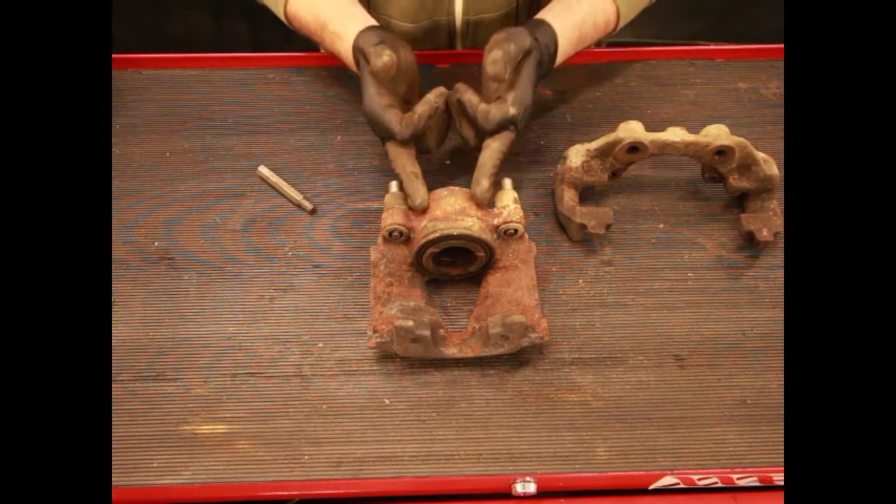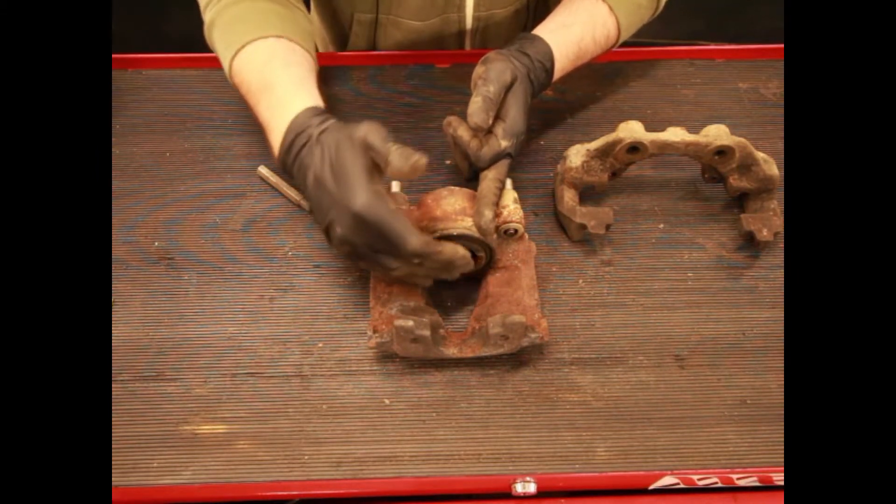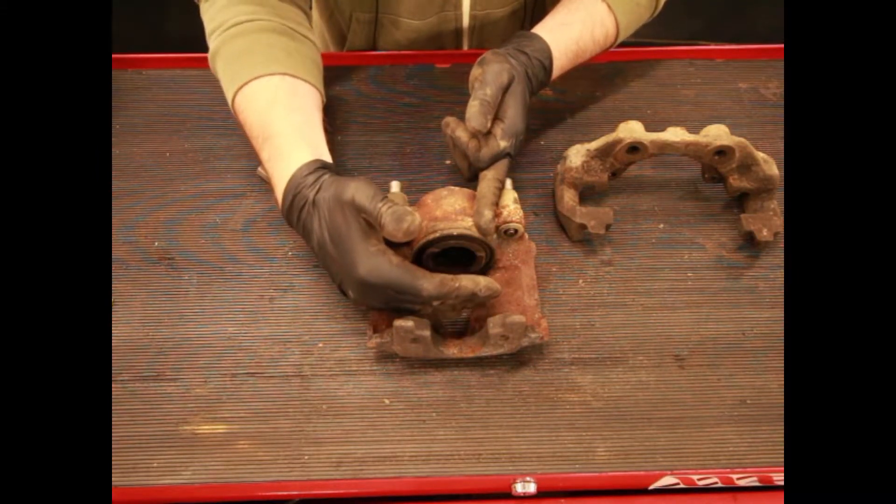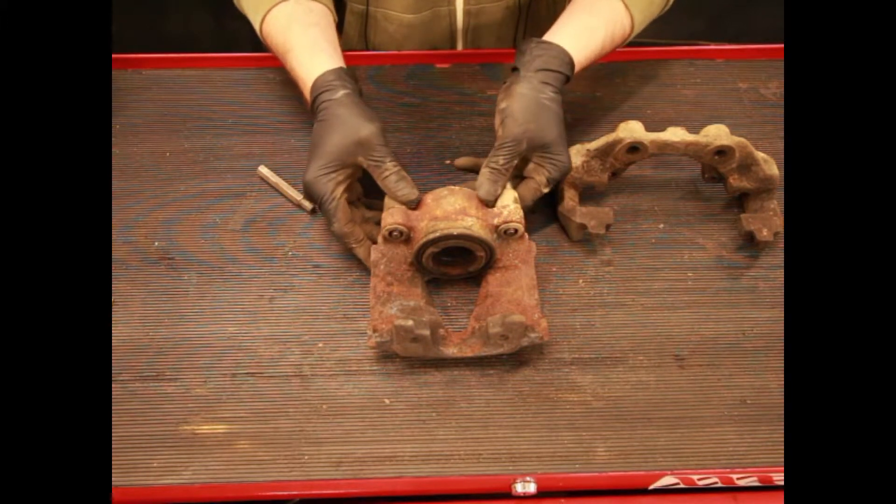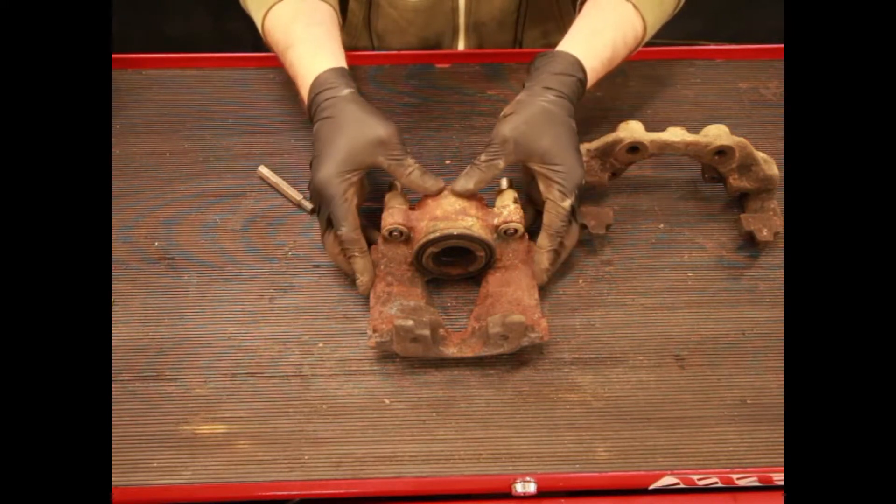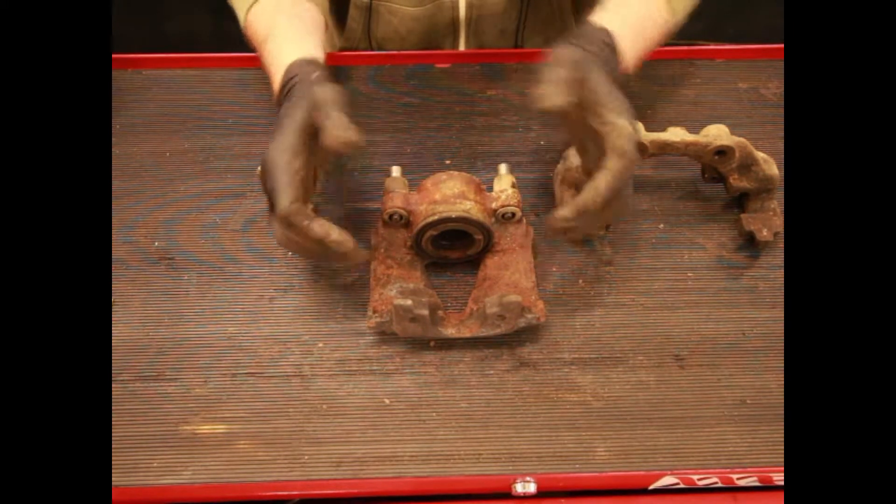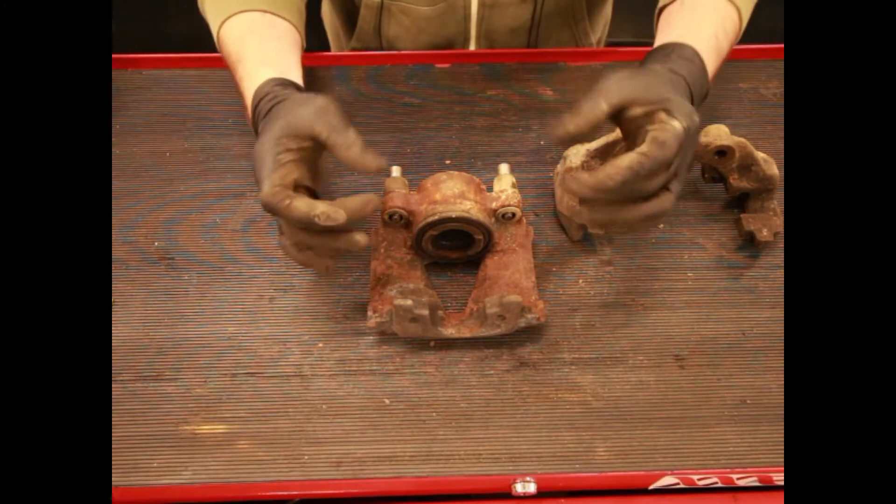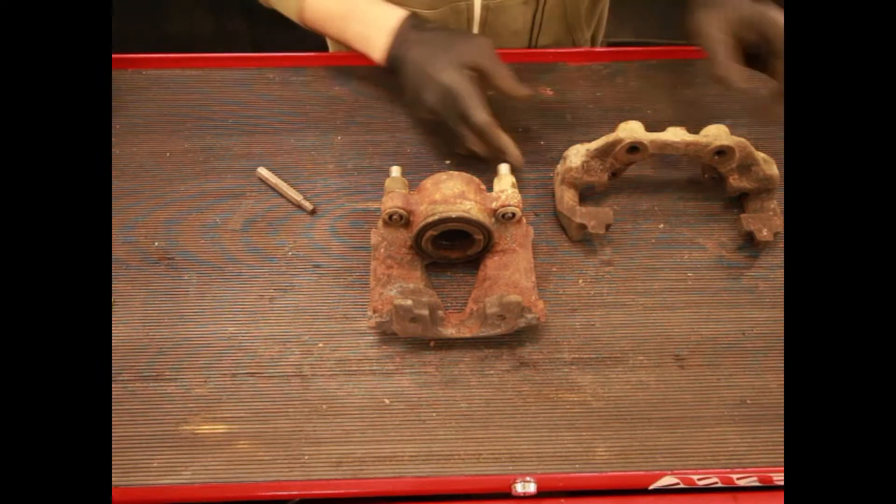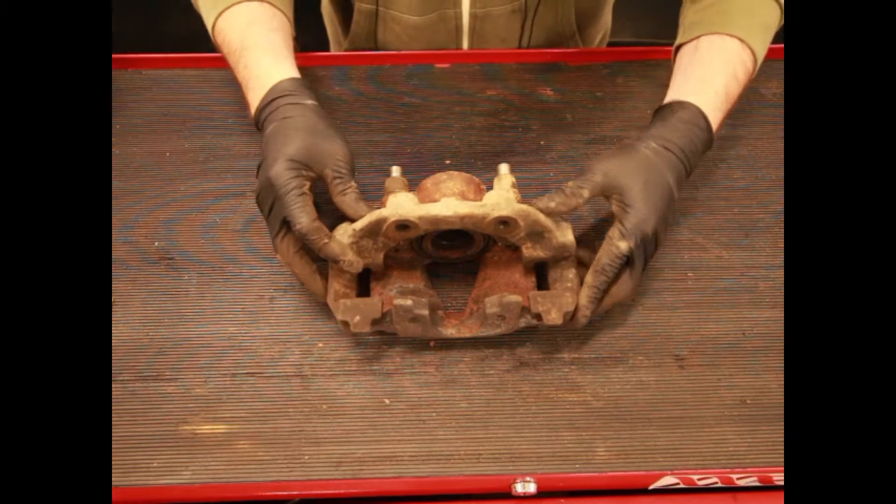And as fluid pressure acts this way on the piston, when the pad makes contact with the disc, it physically pulls the body of the caliper back this way and ensures that the other friction pad clamps the other side of the brake disc.